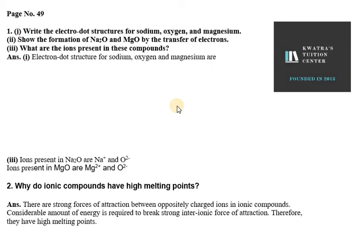So question number 1 says, write the electron dot structure for sodium, oxygen and magnesium. So for sodium, the electronic configuration is 2,8,1. For oxygen, it is 2,8,6. Now for magnesium, it is 2,8,2.